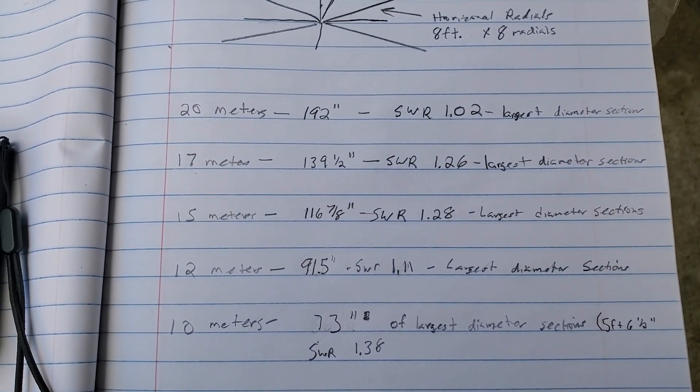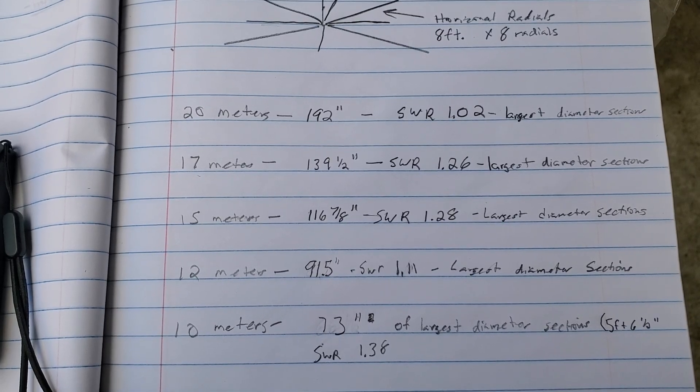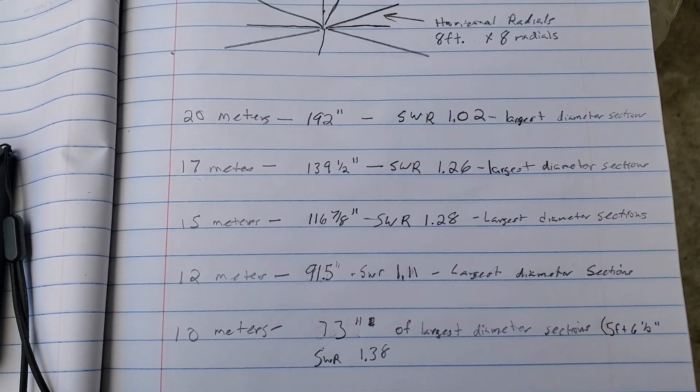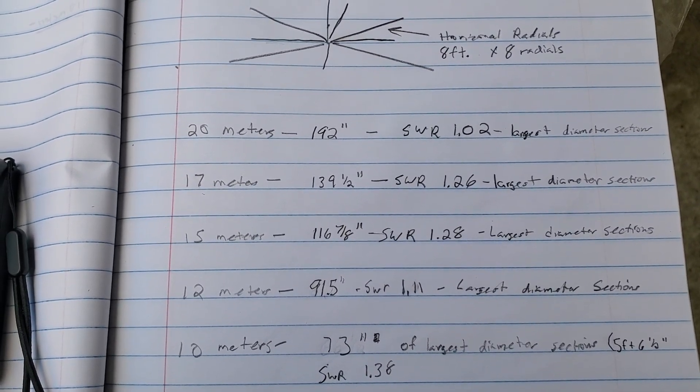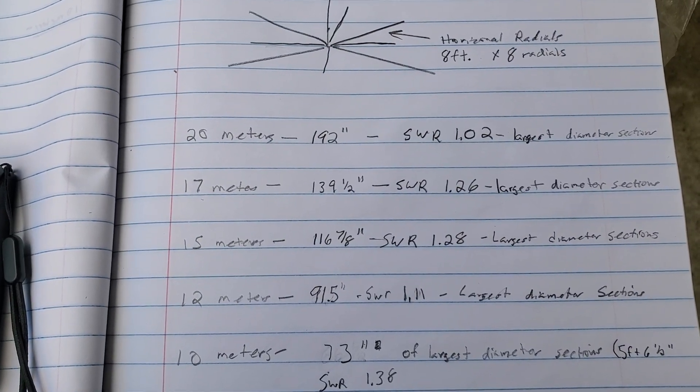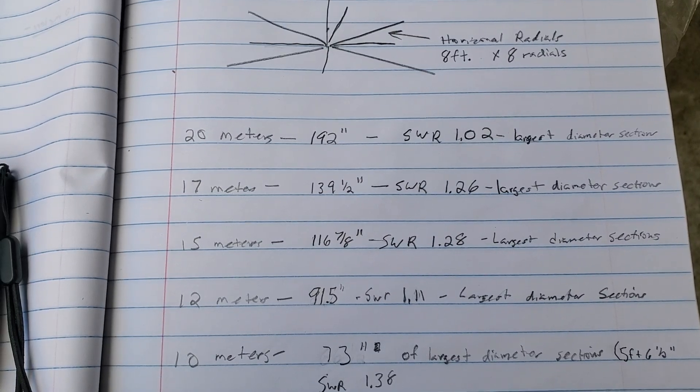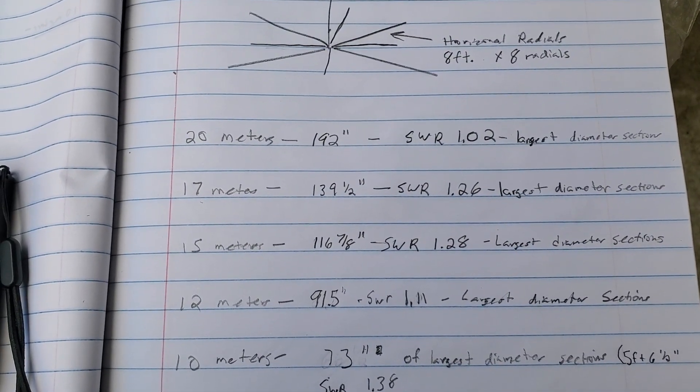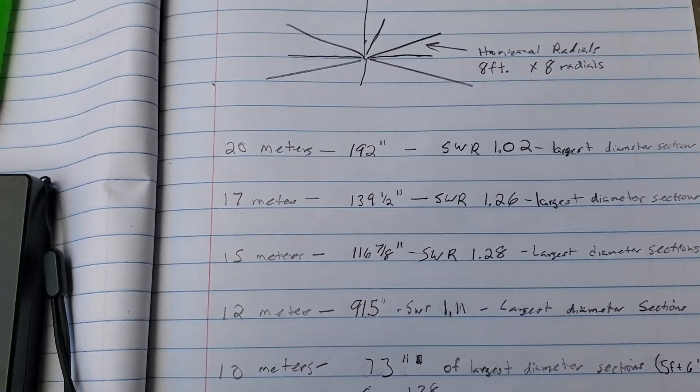So let's just look at it: 10 meters is an SWR of 1.38, 12 meters is 1.11, 15 is 1.28, 17 is 1.26, and 20 meters has an SWR of 1.02 to 1.03. And in case you don't believe it,